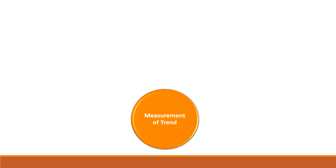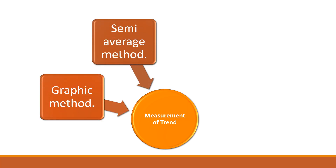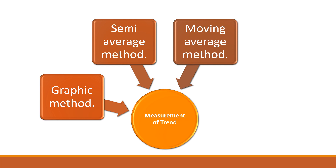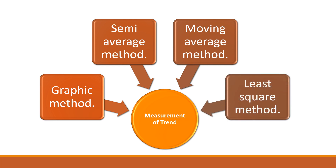The next topic is measurement of trend. There are four components in time series, with the first one being secular trend. How can we measure the trend? There are four methods: the first is the graphical method, the second is the semi-average method, the third is the moving average method, and the last one is the least squares method. These are the methods used for measuring the trend, and I will discuss them one by one.